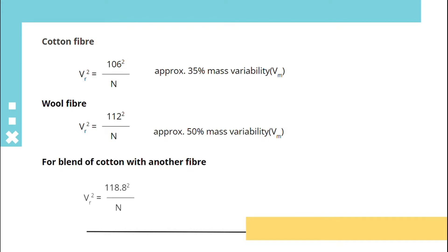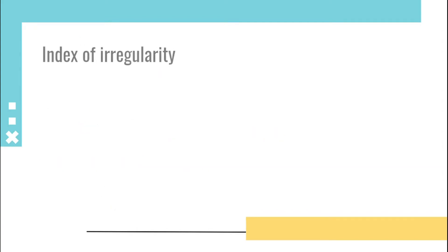Index of irregularity: It is used for determining the performance of a machine, that is V/V_r, actual irregularity upon calculated limit irregularity. V_r is always less than V, so the index of irregularity will always be high.